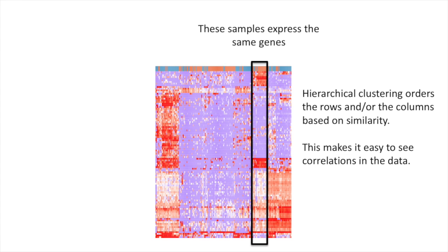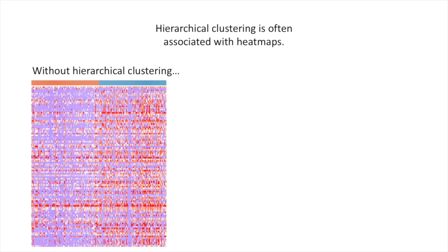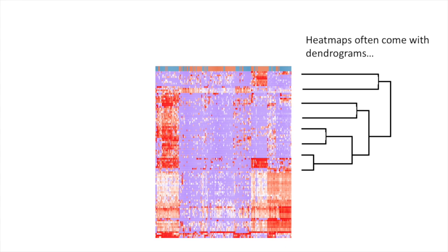For example, these samples express the same genes, and these genes behave the same. On the left, we have a heat map without hierarchical clustering, and on the right, we have a heat map with hierarchical clustering. So you can see that the clustering makes a big difference in how the data is presented. Heat maps often come with dendrograms, so we'll talk about those too. Let's get started.